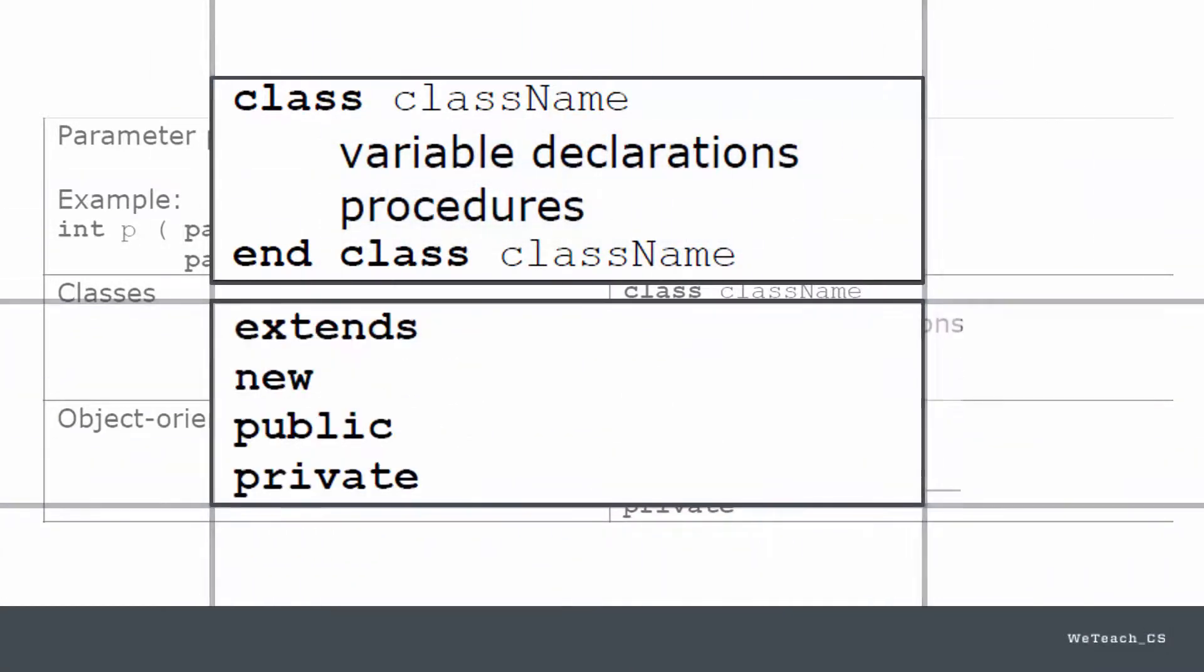Several key words associated with class definitions and use are shown here. The word extends is the reserved word in most languages that indicate a process called inheritance. The word new is used to instruct the compiler to instantiate or bring into existence a new instance of an object based on a class definition.